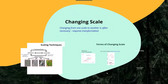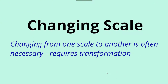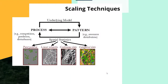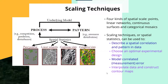We also have to recognize that changes in scale require transformation. If you're working at one scale and need to transfer to another, you'll need some way of transforming your data. Scaling techniques are important to understand, and there are various methods by which you can work at different types of spatial scale, including points, linear networks, continuous surfaces, and categorical mosaics. These scaling techniques or spatial statistics can be used to describe spatial correlation and pattern in the data, to choose an optimal experimental design, to model correlated measurement error, or to interpolate data and construct contour maps.